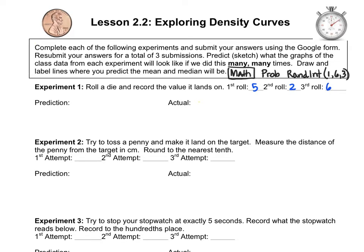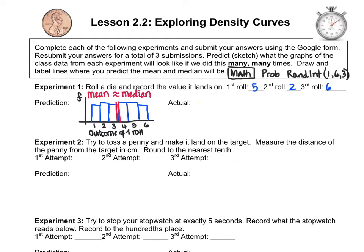Now let's think about what we would predict our class data would look like if we all did this activity many times. We know the possible outcomes are 1 through 6, and we know that we can expect roughly the same number of 1s, 2s, 3s, 4s, 5s, and 6s over the long run. This gives us an approximately uniform distribution, and we would expect the mean and the median to be very close to one another. If we actually did this many times, we would call this the experimental probability.